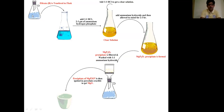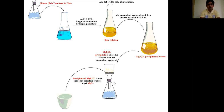The pictorial procedure for magnesium determination: filtrate B is transferred to a flask and 1:1 HCl with 2–3 g ammonium hydrogen phosphate is added to form a clear solution. Ammonium hydroxide is added and the mixture is allowed to stand for 2–3 hours, causing magnesium to precipitate as magnesium pyrophosphate. The precipitate is filtered and washed with 1:1 ammonium hydroxide, then ignited in a porcelain crucible to obtain magnesium oxide. Weighing the magnesium oxide allows calculation of the amount or percentage of magnesium present in the face powder.